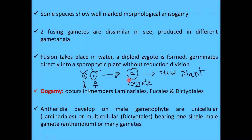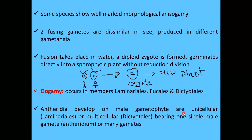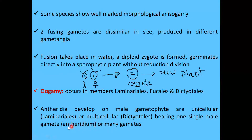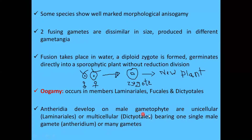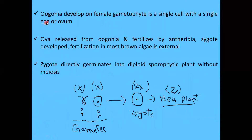Oogamy is a process in sexual reproduction in which both gametes are different in nature. It occurs in members of Laminariales, Fucales, and Dictyotales. The antheridia, which are male gamete-producing organs, develop on the male gametophyte. They may be unicellular, as in Laminariales, or multicellular, bearing a single male gamete or many gametes.